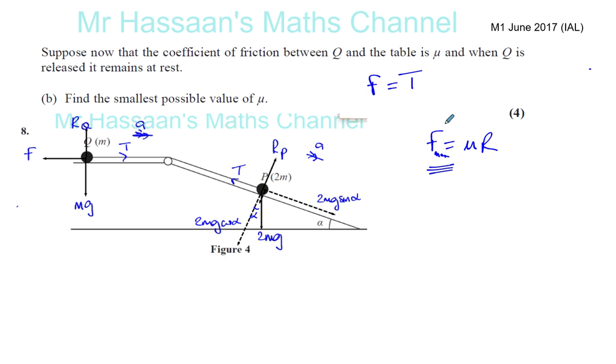Once the tension increases so that it's more than the maximum possible value of the friction, then it will start moving. So you want to find the value of mu when F max is reached, when the limiting friction is reached.